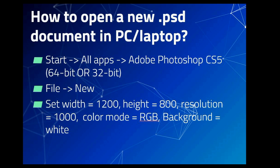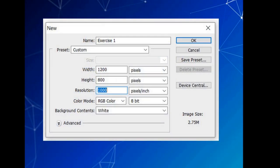To open a new Photoshop document on a PC or laptop, go to the Start button, click All Apps, and select Adobe Photoshop CS5 based on the operating system (64-bit or 32-bit). Then go to File > New and set the width, height, resolution, color mode, and background. For example: name as Exercise 1, width 1200, height 800, resolution 1000, color mode RGB, background white, then click OK.